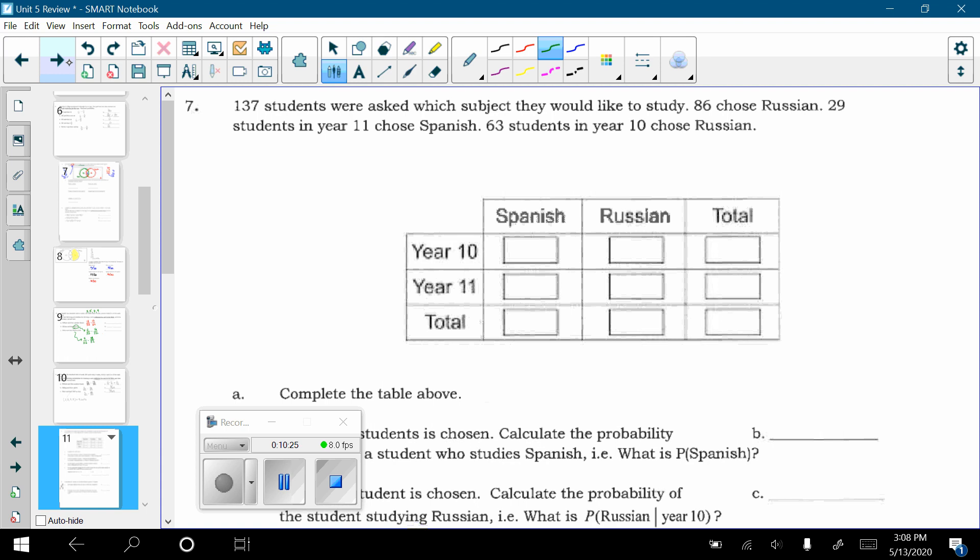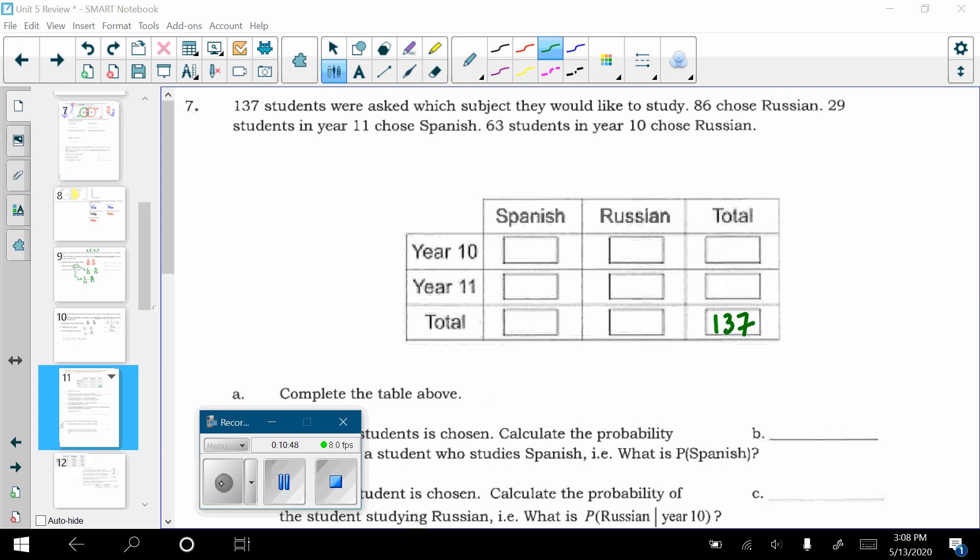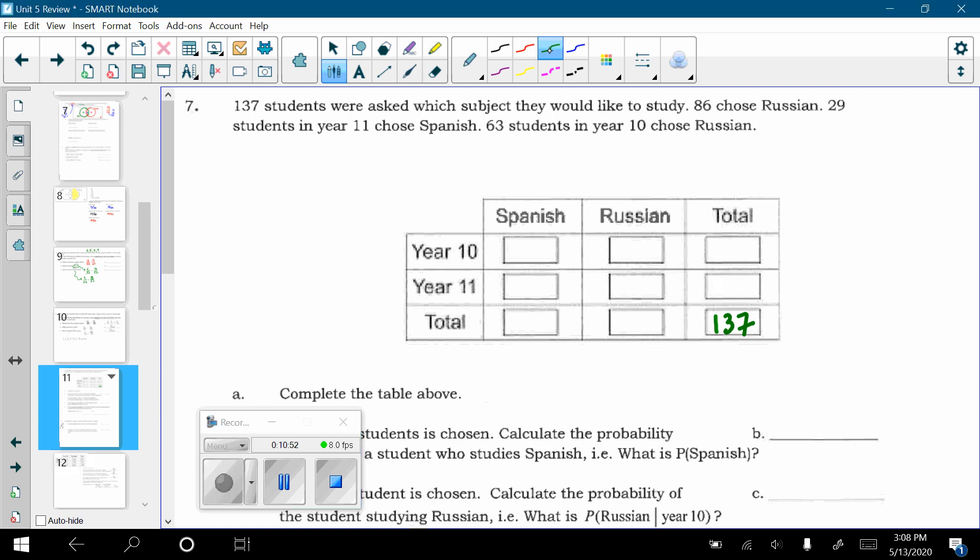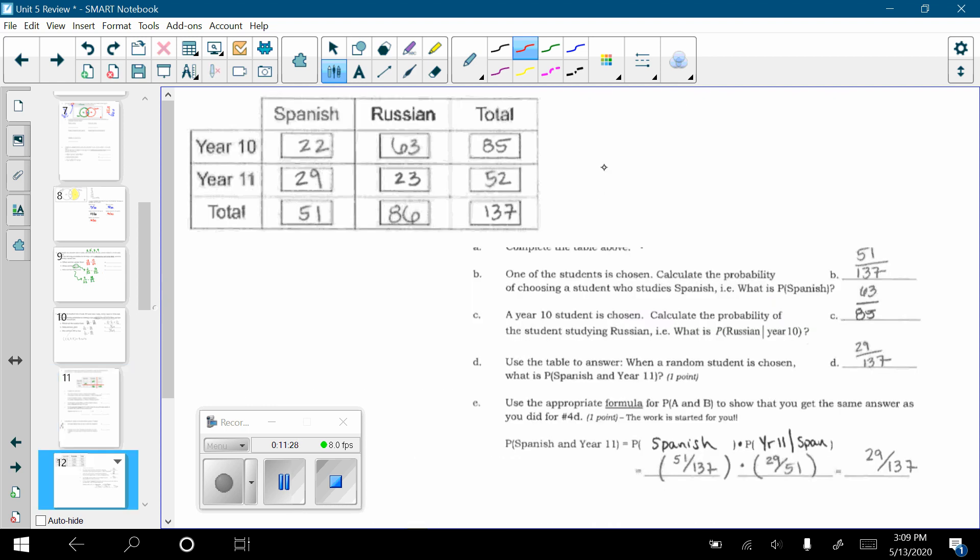Okay. In question, the next question, we have a two-way table. People who study Spanish. People who study Russian. Year 10 students. Year 11 students. Okay? So, it said there is 137 students who were asked which subject they would like to study. So, I am going to say that that is 137 total. It says that 86 of them chose Russian. So, this subtotal over here is 86. 29 students in year 11 chose Spanish. So, I am going to read across the year 11 and say year 11 Spanish was 29. And 63 students in year 10 chose Russian. Now, those totals are enough for you to figure out the rest of the boxes. So, for instance, we kind of highlight the totals here. 63 plus something equals 86. Right? You can subtract to figure that out. And just keep doing that. And you should figure out these numbers. Okay? That is just adding and subtracting my friends.